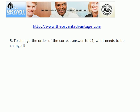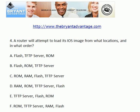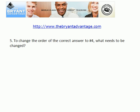I'm not looking for an exact command here, but just in general, what needs to be changed? Going back to question four, we were asked where a router will attempt to load its IOS image from, and then we need to know, in general, how to change that order.